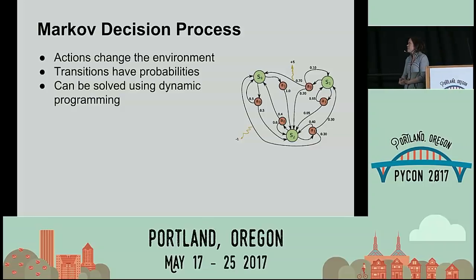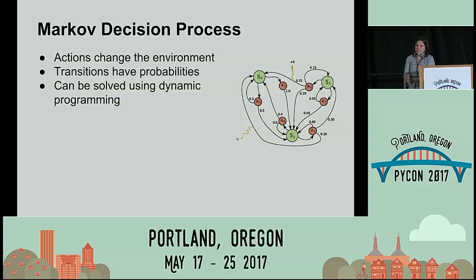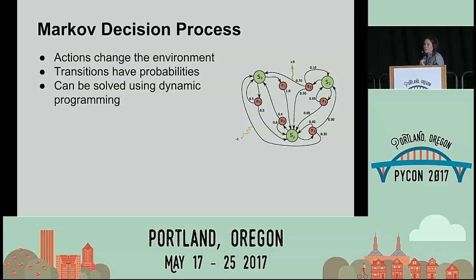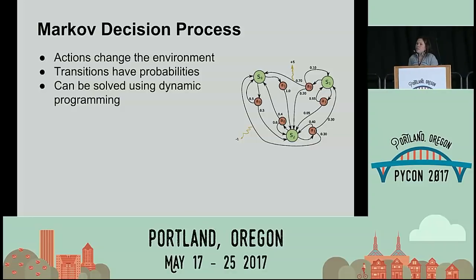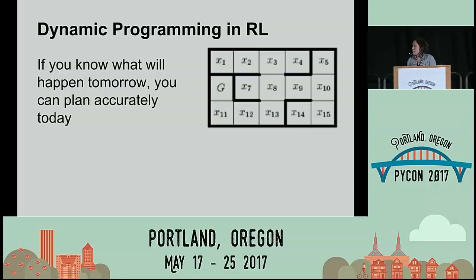Now we're going to extend this idea to look at longer-term planning. A Markov decision process is a way for us to understand how actions change the environment. This is where we get into the basic setup: your state, your action, your reward, your new state, and your new action. In this little graph, you have three states, two actions, and transition probabilities that go between these actions. If we know these transition probabilities, then we can use dynamic programming to solve this MDP. Dynamic programming basically means: if you know what will happen tomorrow, then you can accurately plan today.